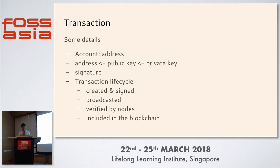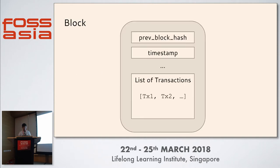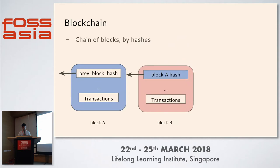After it is verified by nodes, if there is no accident, it will be included in the blockchain. The block has the fields of previous block hash, timestamp, and transactions. The blockchain is actually the chain of blocks, and it is chained by the hashes.